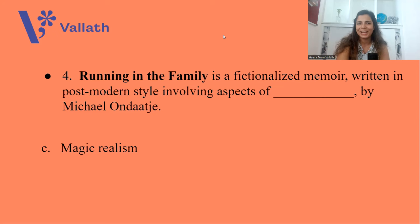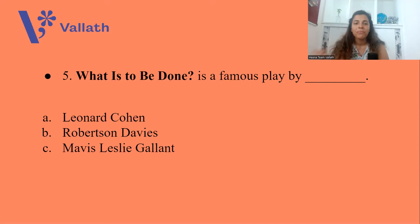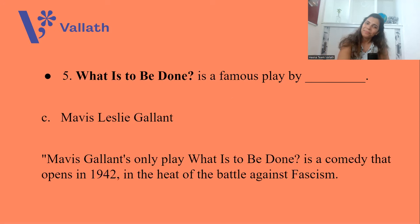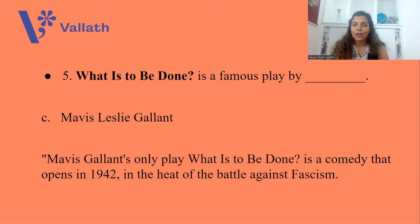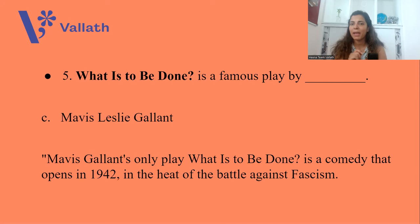Question number five: What is to be Done is a famous play by A. Leonard Cohen, B. Robertson Davies, or C. Mavis Leslie Gallant. What is to be Done is a play by option C, Mavis Leslie Gallant. It is Mavis Gallant's only play. It is a comedy which opens in the year 1942 and deals with the battle against fascism.